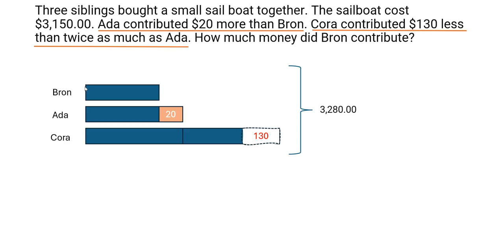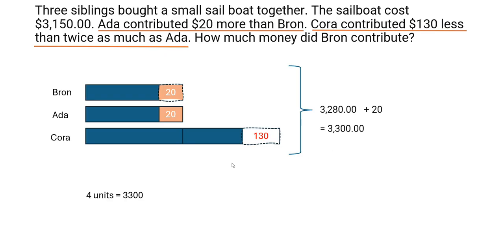The only thing that is not correct now is Brawn — the unit size for Brawn is different compared to the rest, it is twenty dollars less. To make all unit sizes the same, I can add twenty here. But if I add twenty, the total will increase by twenty, and the new total becomes three thousand three hundred. Now I have one, two, three, and four units of the same size which equals three thousand three hundred dollars. So four units equals three thousand three hundred, meaning one unit is three thousand three hundred divided by four, which equals eight hundred and twenty-five dollars.